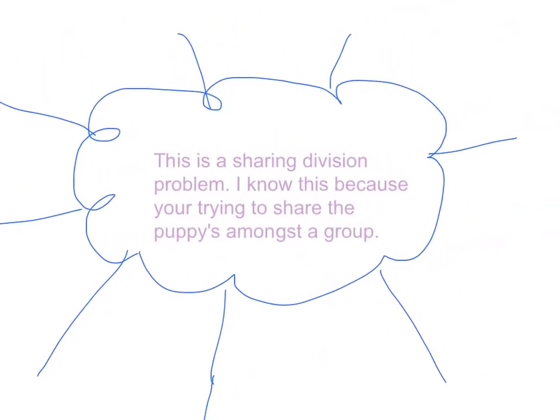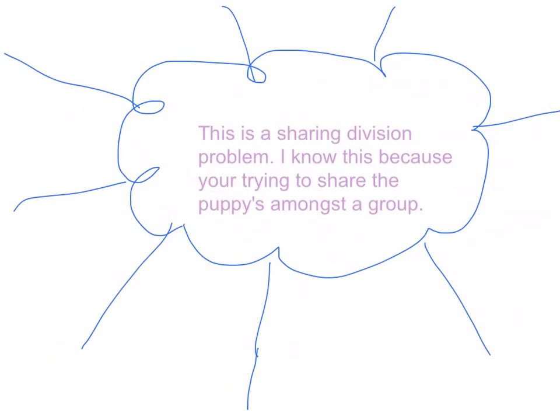This is a sharing division problem. I know this because you're trying to share the puppies amongst a group. We're trying to figure out how many puppies each customer will get.